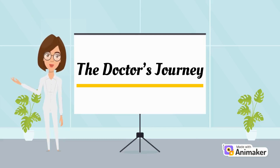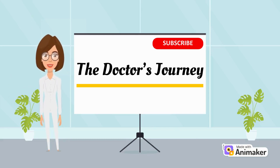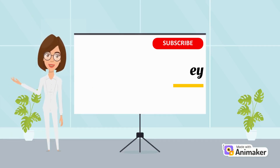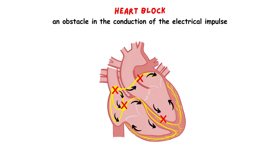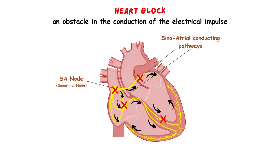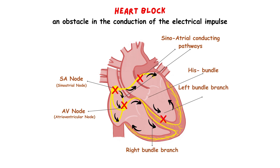Dear students, welcome back to my channel. In this video we are going to discuss the hemiblocks. Under the term heart block is understood any condition in which there is an obstacle in the conduction of the electrical impulse through the cardiac electrical conduction system. A heart block can occur anywhere in the electrical conduction system of the heart, starting at the SA node, at the sino-atrial conducting pathways, the AV junction, the bundle branches and their subdivisions.